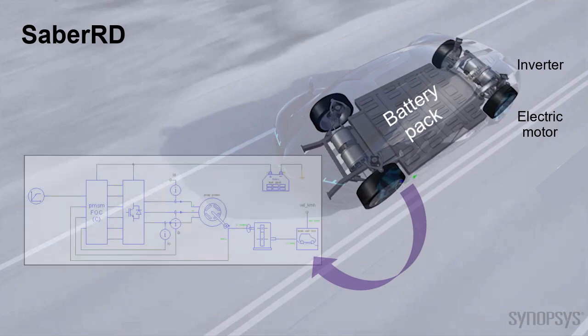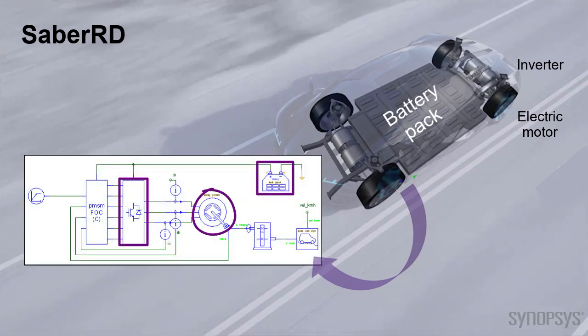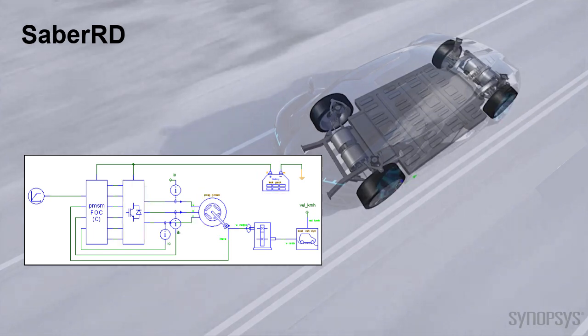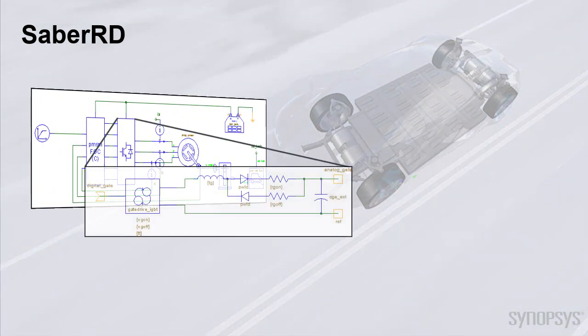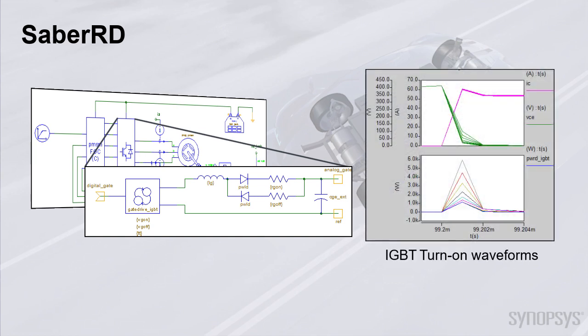Integrating all key components as shown here, you can create the complete EV powertrain in Sabre RD with appropriate gate drive circuits using accurate and high-fidelity switching models to perform various in-depth analysis for EMI switching and conduction losses.